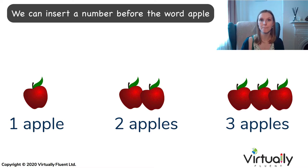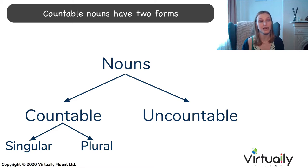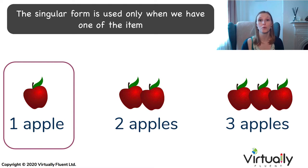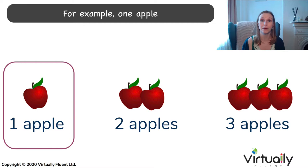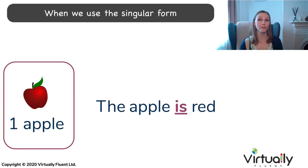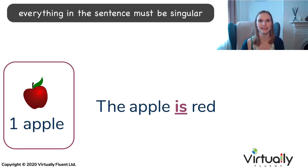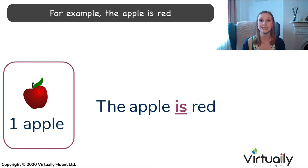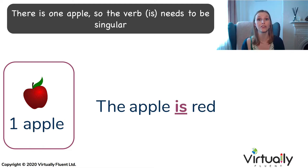We can insert a number before the word apple. Countable nouns have two forms: a singular form and a plural form. The singular form is used only when we have one of the item — for example, one apple. When we use the singular form, everything in the sentence must be singular: the verb, the pronoun, the demonstrative, articles. For example, the apple is red. There is one apple, so the verb 'is' needs to be singular.